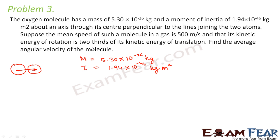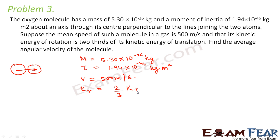It is also given that the mean speed of such a molecule is 500 m/s. And it is given that the kinetic energy of rotation is two-thirds of its kinetic energy of translation. We have to calculate the average angular velocity of the molecule.